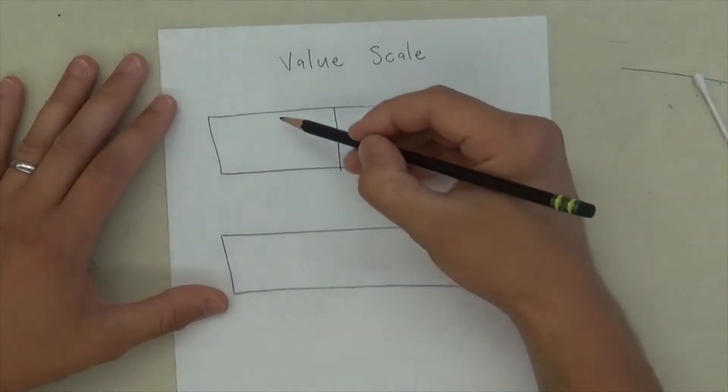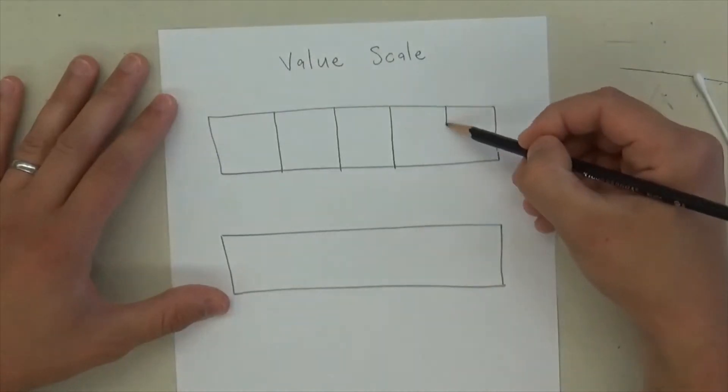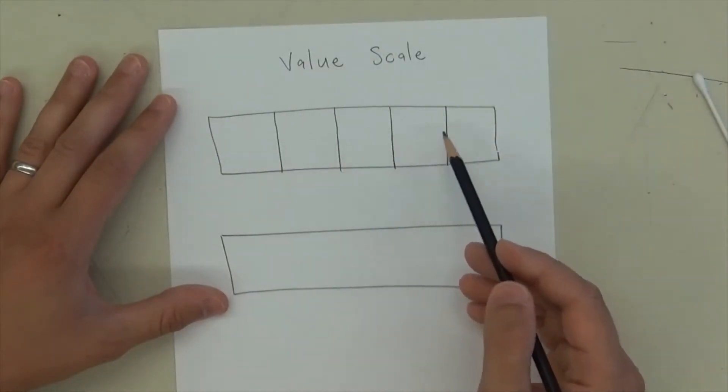and then take the ones on the side and split those in half, and then you've got one, two, three, four, five.